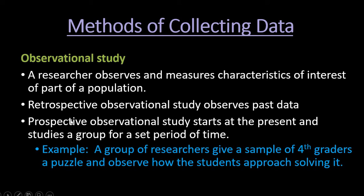A prospective observational study is something that starts right now and then studies a group for a set period of time. It could be something that's very short, or it could go on for many years. An example of this is a group of researchers giving a sample of fourth graders a puzzle and simply observing how the students approach solving it.